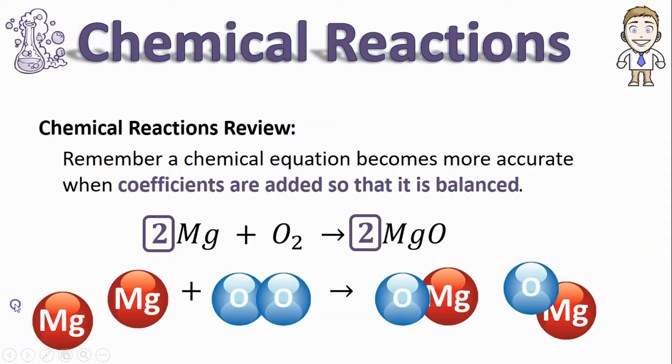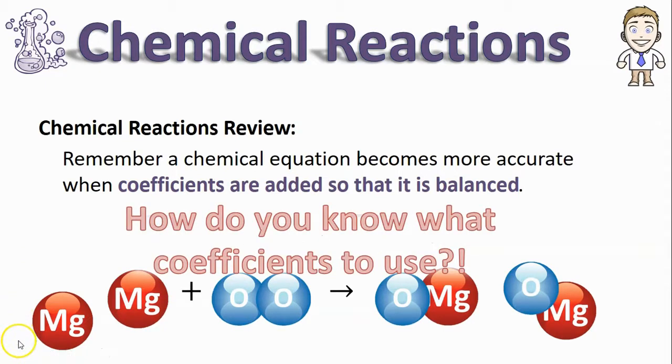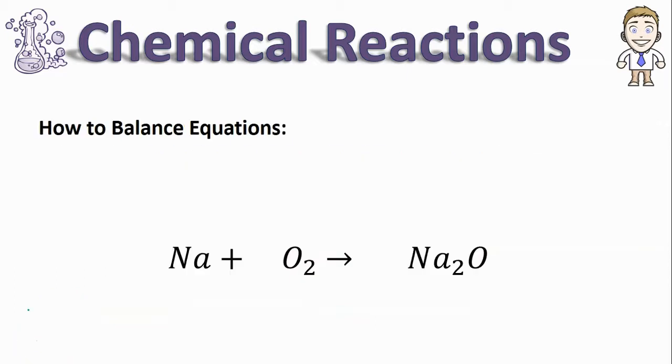The only thing we did not say in the last video is how do you know what coefficients to use. So let's take a look at a couple examples of exactly how to balance. The first thing we're going to do when we're balancing is start with the first element on the left and count the quantities of that element on each side.